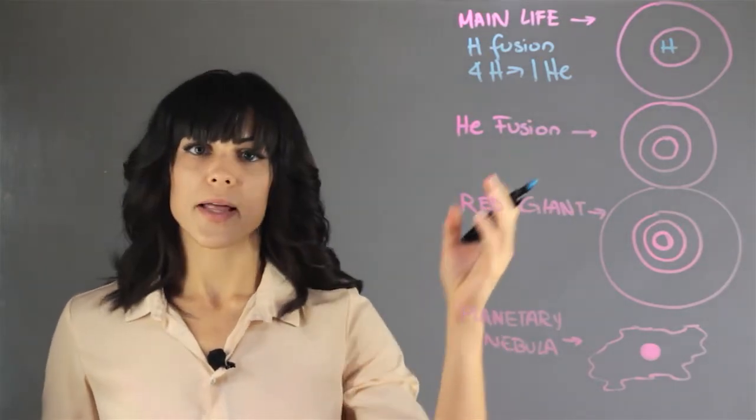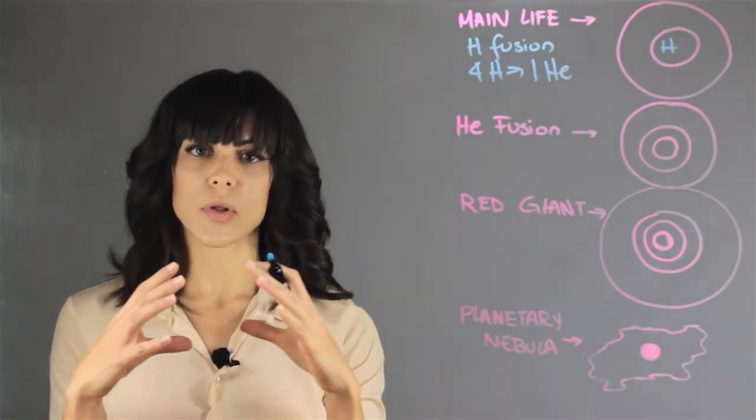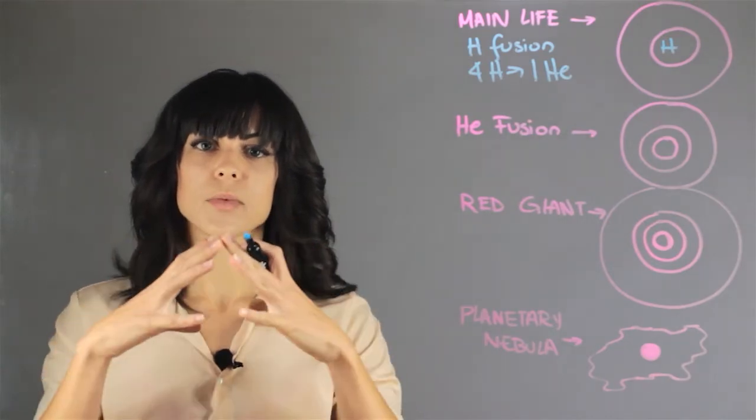Then after that we run out of hydrogen, so what starts to happen to the star? Well, the core begins to collapse under its own gravity, and then the outer shells are actually beginning to expand.